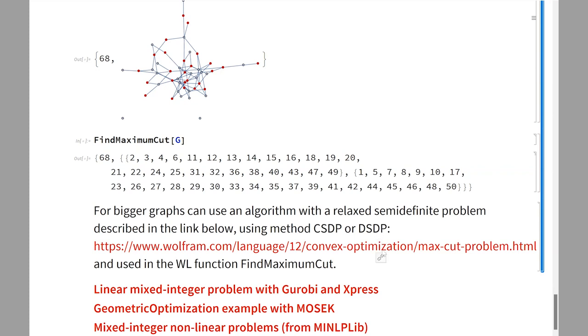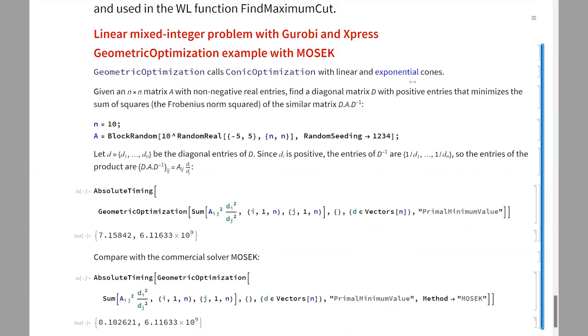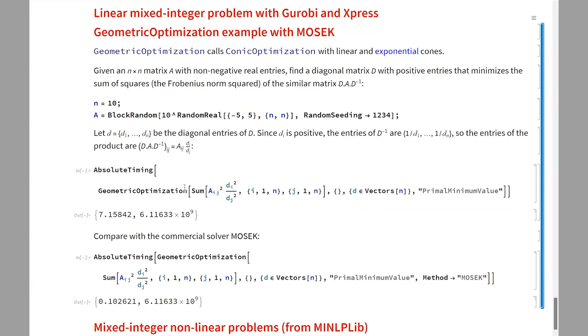For some very large linear mixed integer problems, the commercial solvers Gurobi works very fast. Xpress is also doing a very decent job. For geometric optimization problems, I usually like to use MOSEK because it works very well with exponential cones and with norm cones. In geometric optimization, the problems are converted into conic optimization problems with linear and exponential cones. In this simple problem, when n is 2, we get close to 100 exponential cones, and the commercial library MOSEK solves this problem fast and robust compared to the default method.